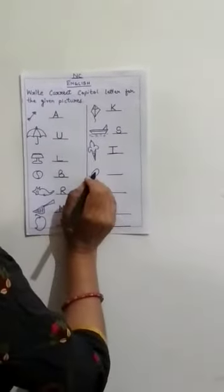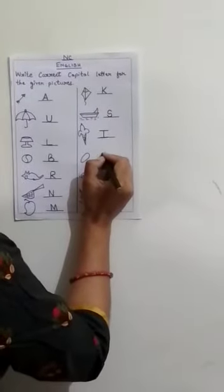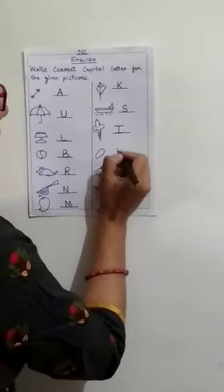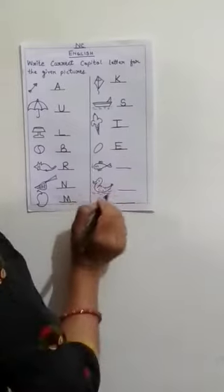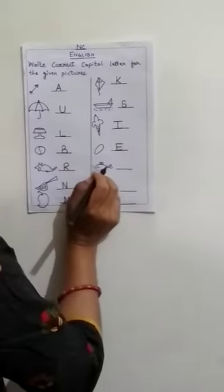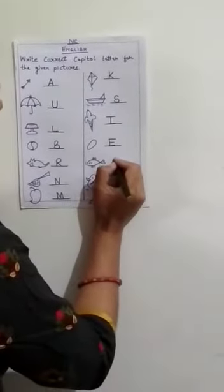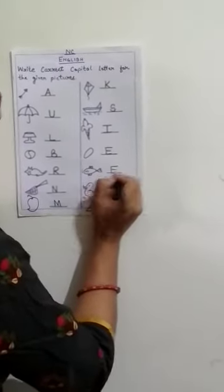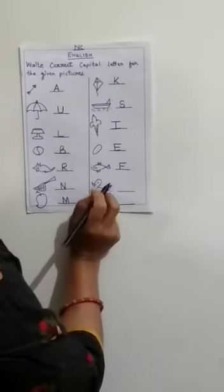This is egg. E for egg, capital E. This is fish. F for fish, write capital F. This is duck.